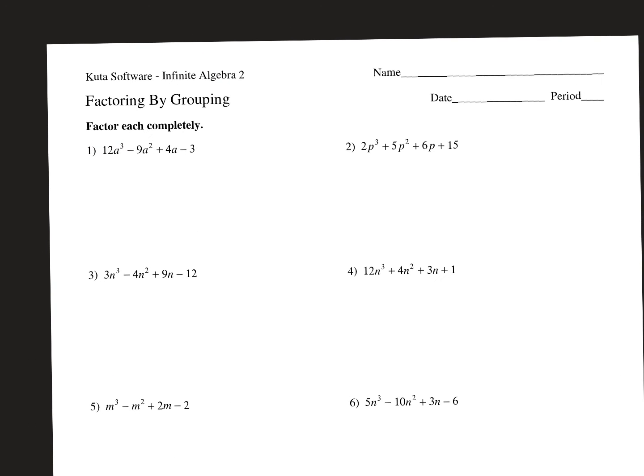Go ahead and pull up the assignment that's due for tomorrow. We're going to do half of the problems together, and then you guys will have the rest of the class period to finish and ask questions. Your test is not tomorrow — it's next Tuesday, September 7th. So today we're doing factoring by grouping, tomorrow we factor where a is not one, and Wednesday through Friday we'll practice.